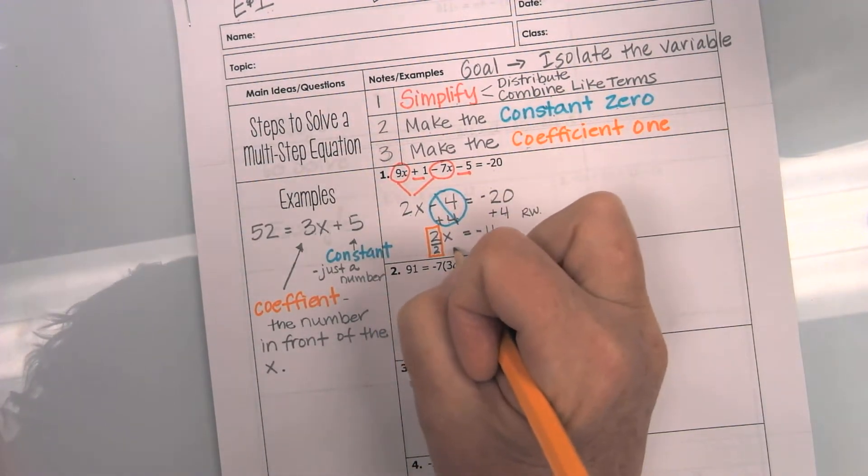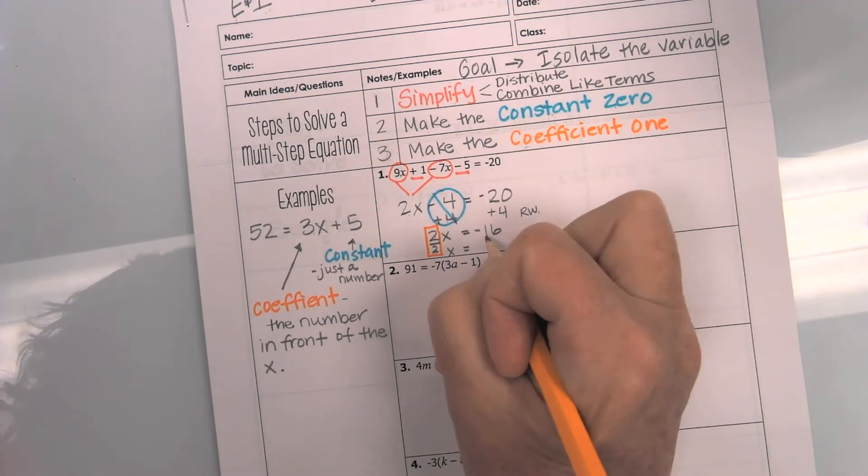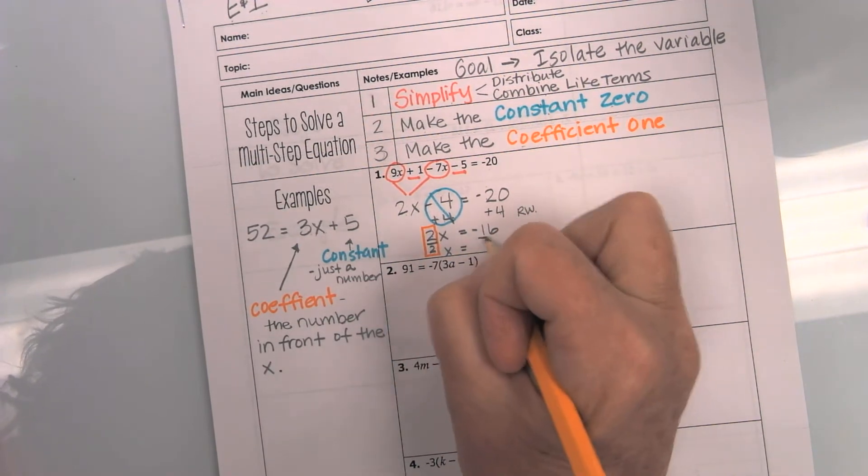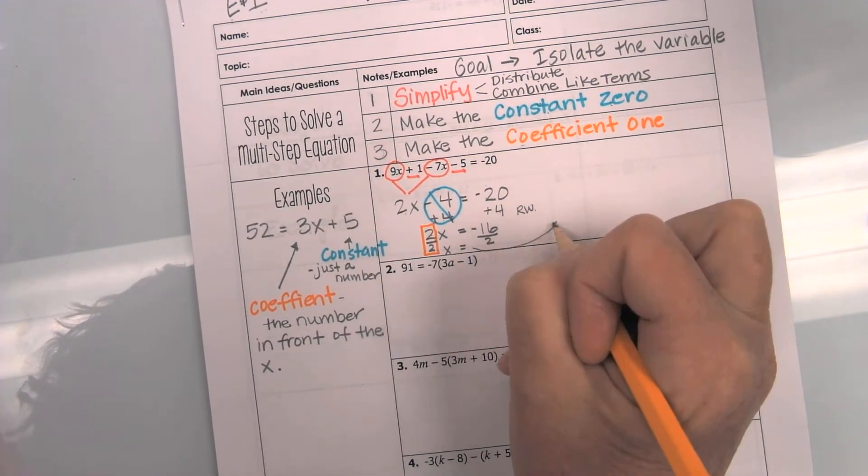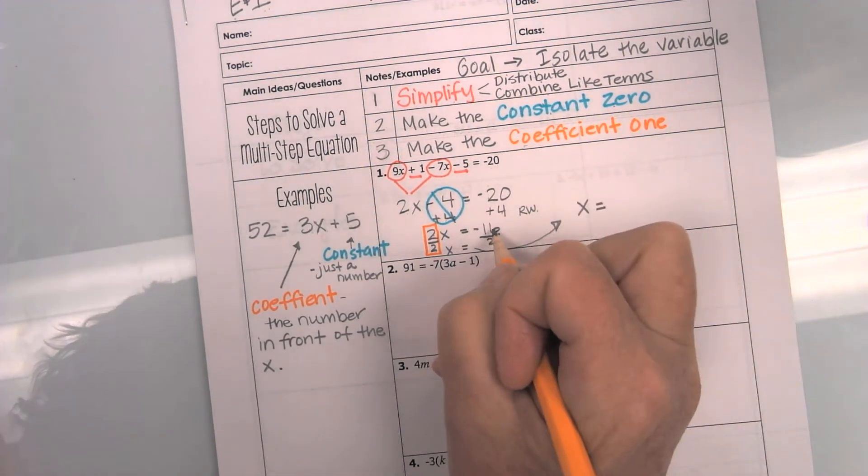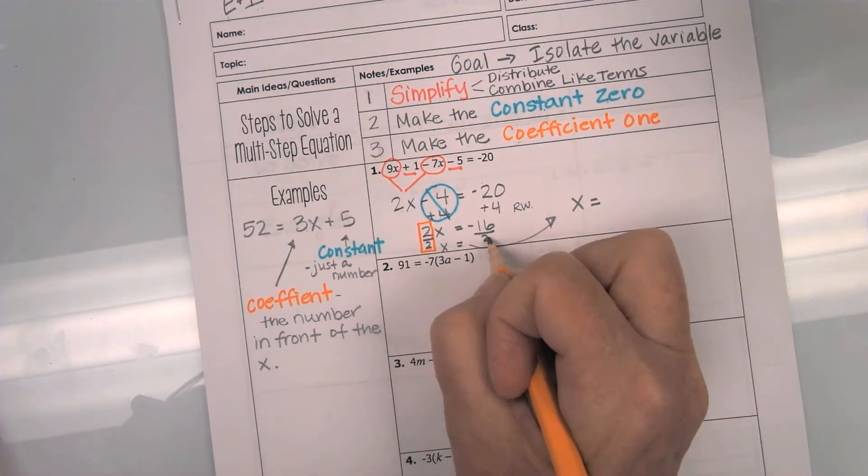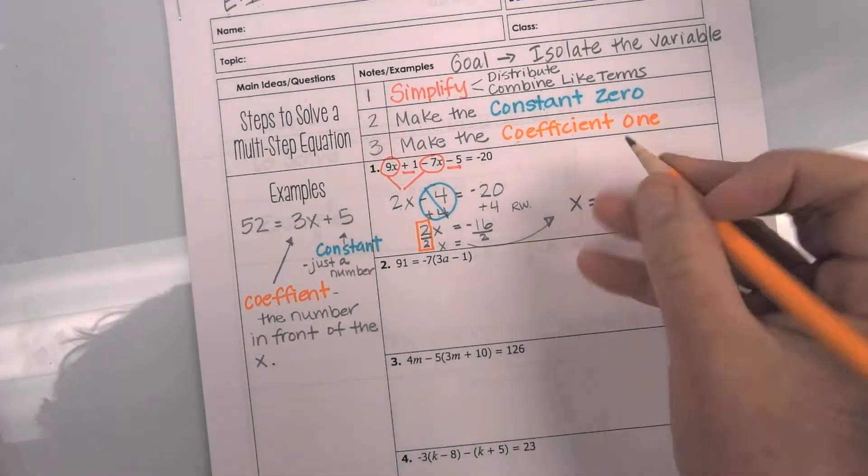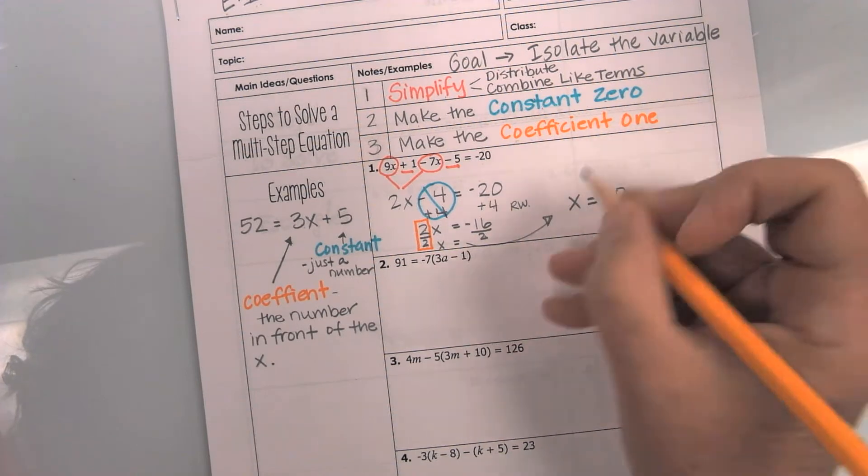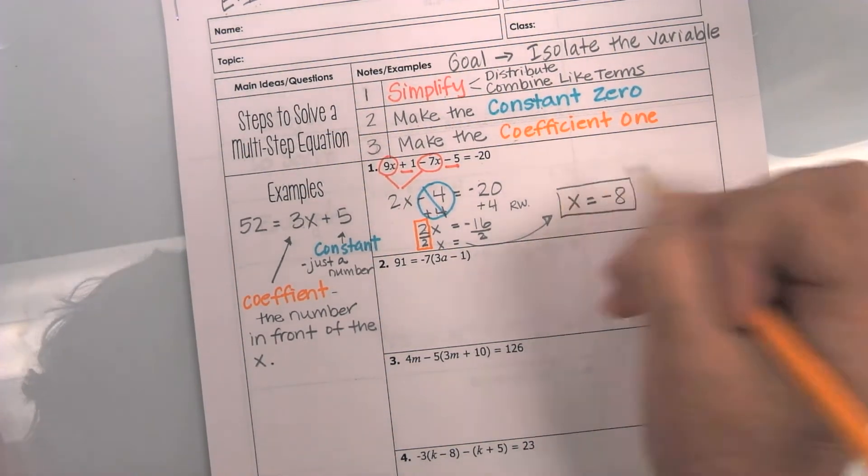And so, now I have x equals, and then over here, remember if I divide by 2, I need to divide by 2. And I'm out of space, so I will move it up here. I'm at x equals, I have a negative 16 divided by 2. You can either do that in your head or go ahead and get a calculator. But we are left with negative 8. So, that is how I solve number 1.